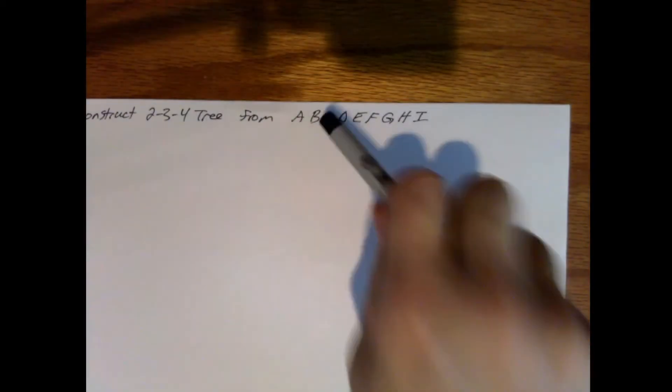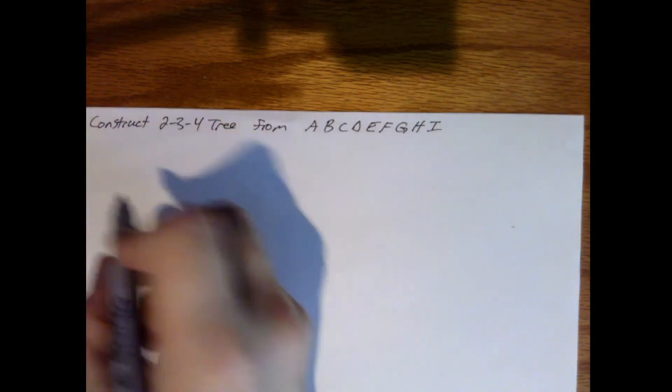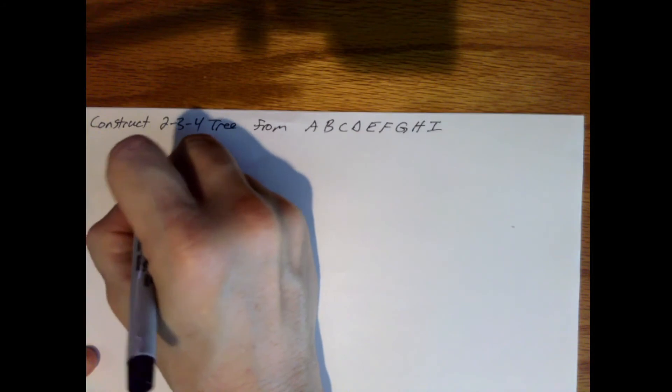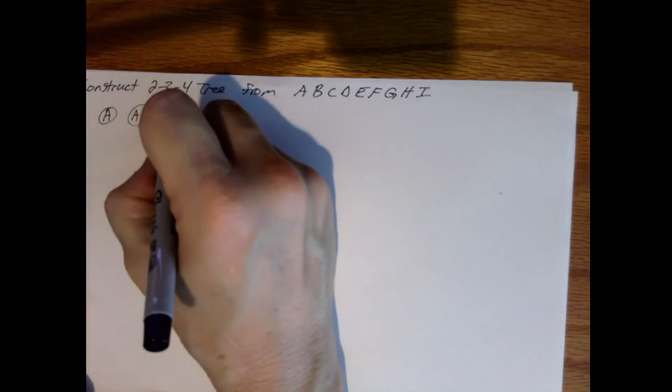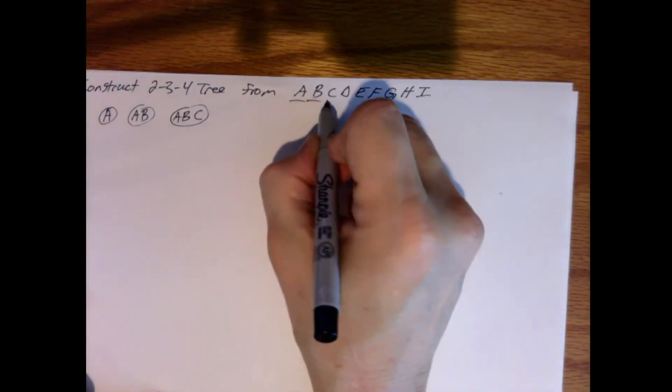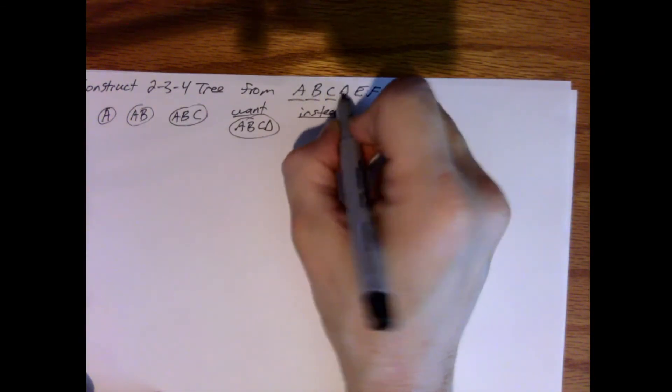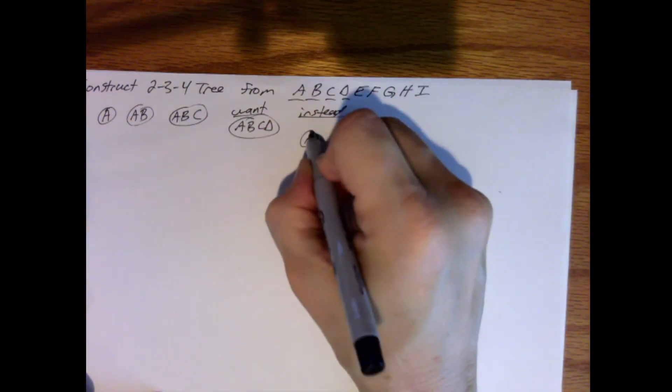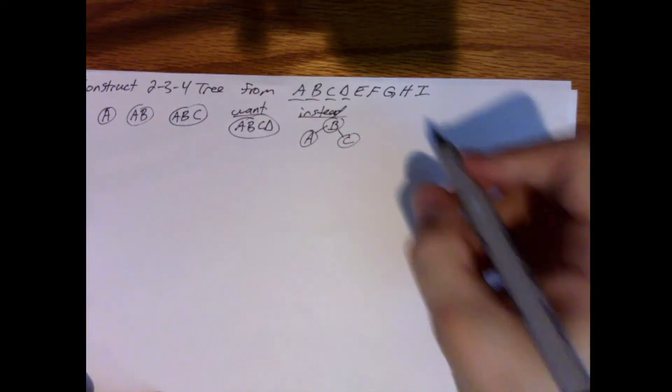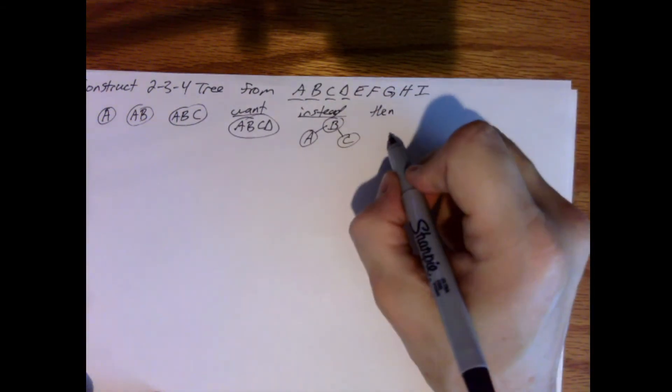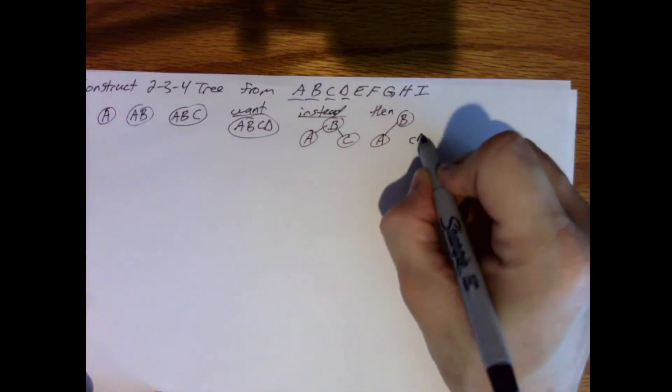Let's do another example. We'll also be constructing a 2-3-4 tree from this. So these are already in order. Let's see what that does in constructing the tree. It doesn't change the rules. So we start off with A, AB, ABC. So instead, before I add the D, I split the ABC. So it should be A up to B, back down to C. Then I add the D.